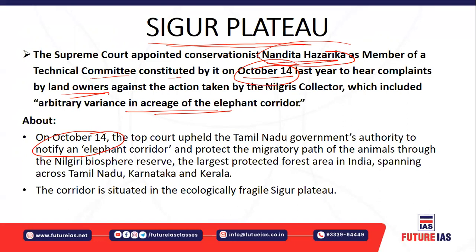On October 14th, when the Supreme Court appointed this committee, it also gave a verdict upholding the Tamil Nadu government's right to notify elephant corridors. These elephant corridors are areas where elephants venture or move out for their day-to-day activities, and are necessary for sustaining elephants in the wild. The ultimate aim of notifying this corridor is to protect the migratory path of these animals through the Nilgiri Biosphere Reserve — the largest protected forest area in our country, spanning Tamil Nadu, Karnataka, and Kerala.